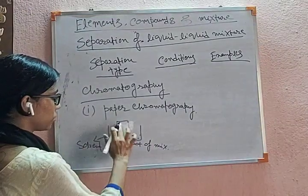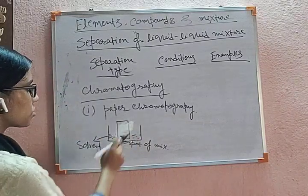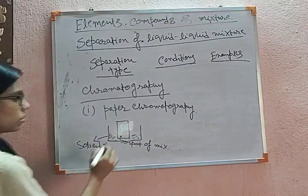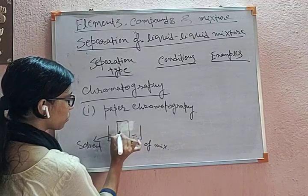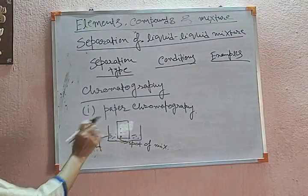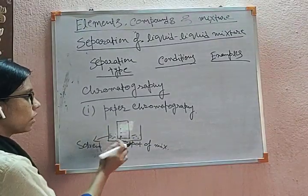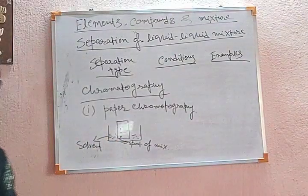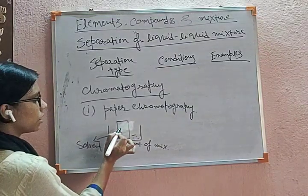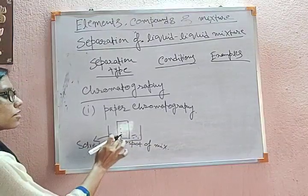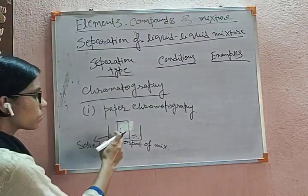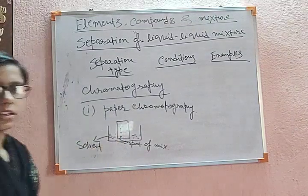When we dip that paper in the solvent, the spot moves upward. After moving, the mixtures are separated. Suppose it contains two liquids in the mixture — we get two spots. When we place a spot of the mixture and put the paper in the solvent chamber, the spot moves upward and separates. One spot appears here and another spot here, representing two liquids.